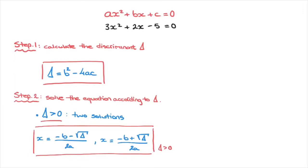The second scenario is if delta, the discriminant, is equal to zero. In this case, the quadratic equation will have one solution, and that solution is given by the formula x equals to negative b over 2a.